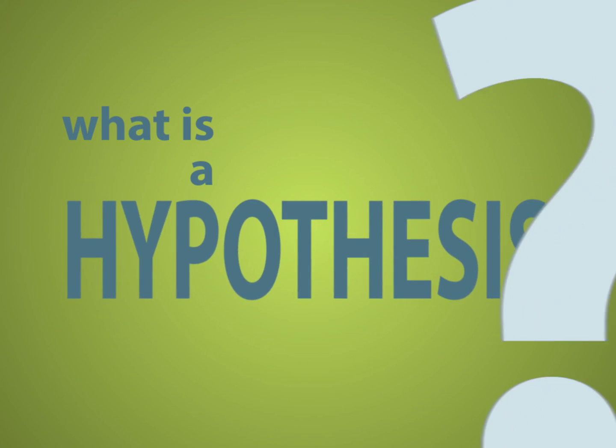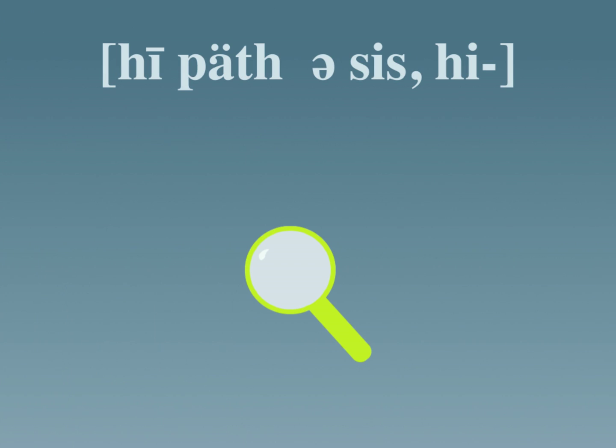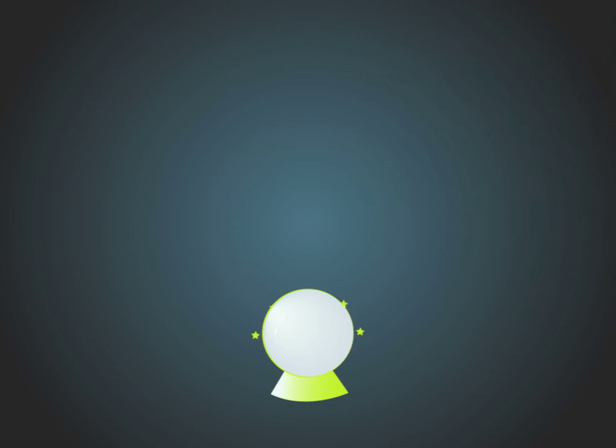What is a hypothesis? The definition of a hypothesis is an unproven theory or statement, or simply it's a prediction, a prediction of what will happen in your experiment.